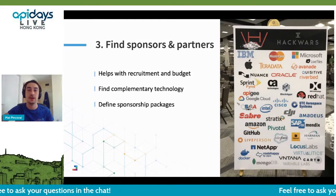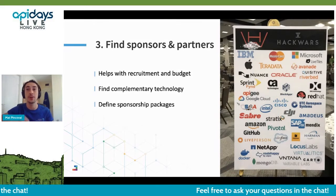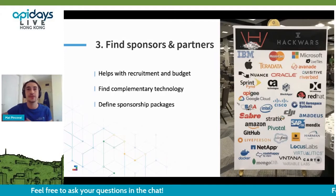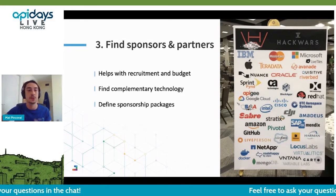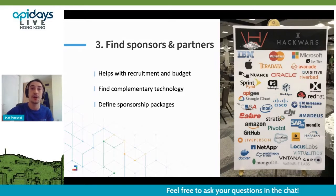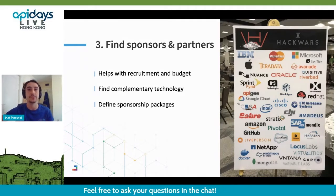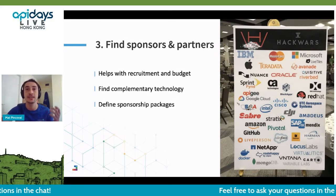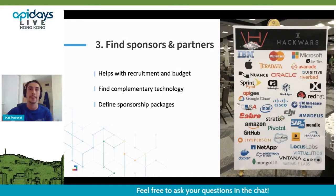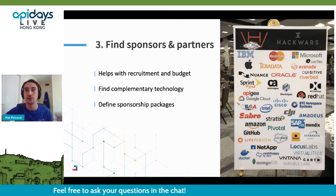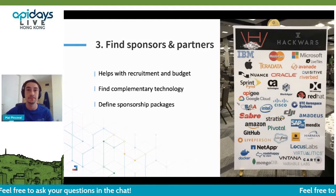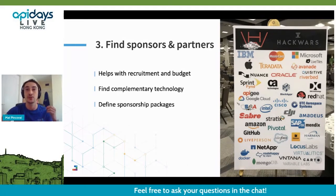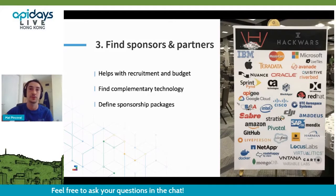To find the ideal partner, I recommend focusing on organizations with complementary technology that participants can combine with your APIs. In the past, we had Microsoft sponsor one of our hackathons and asked participants to build their solutions using our APIs and Microsoft's as well, which worked very well. You also need to agree on a sponsorship package depending on the level of involvement they want — whether they provide their technology, define a challenge, or include a jury member. Make sure you have access to all their documentation and that participants will receive support from them if needed.